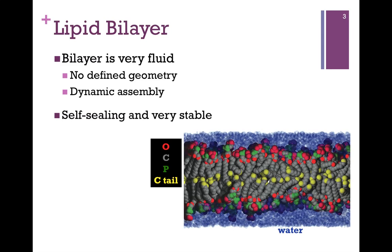Without the lipid bilayer, we would all be amorphous blobs. This is the only way of keeping inside inside and outside outside. It does pose a problem for us, though, and we'll look at that in Chapter 9.